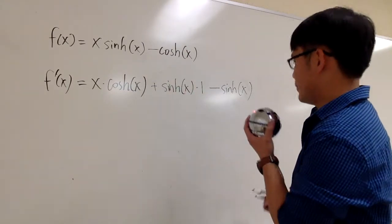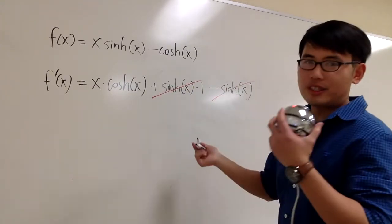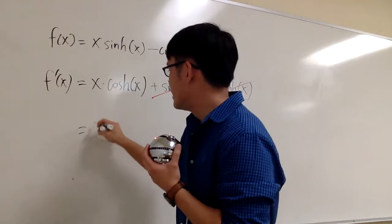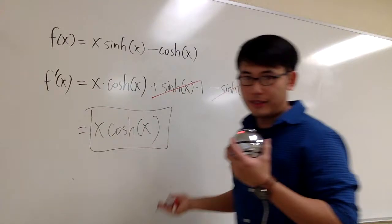Is there anything that we can do? Of course, this and that are the same, so we can cancel these two out. What's the final answer? The answer is just x times cosh x. That's it.